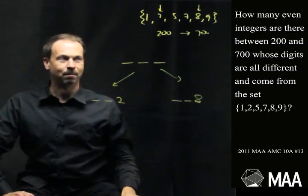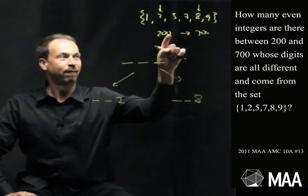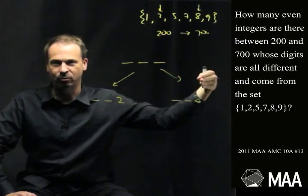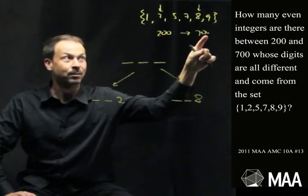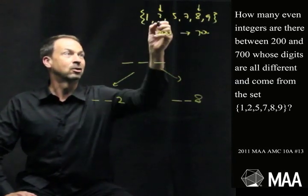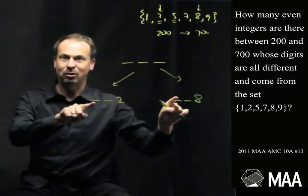What else can I say about this problem? They have to be between 200 and 700. So I guess the first digit better be a 2 in the 200s, or 5 in the 500s or 600s, but not 700s. So what are the allowable digits to go at the very beginning? I guess it could be a 2, it could be a 5. Oh, that's it. The beginning digit better be a 2 or a 5.